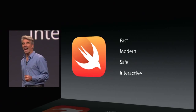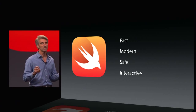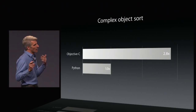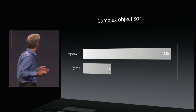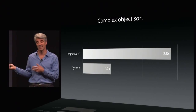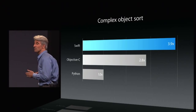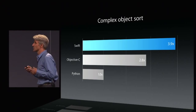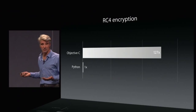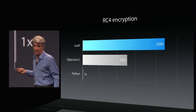Swift is fast, it is modern, it is designed for safety, and it enables a level of interactivity and development that you've never seen on the platform. When it comes to speed, Swift is great. Compare Python, a popular scripting language, with Objective-C on something like complex object sort — Objective-C is a lot faster, but Swift is faster still. And take something like RC4 encryption, extremely computationally intensive. Python gets utterly crushed in this benchmark, but look at Swift.